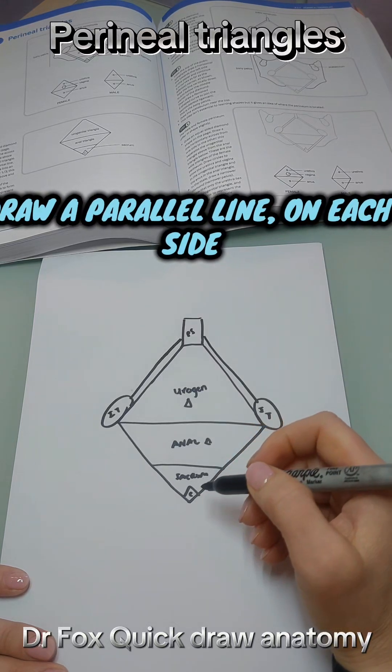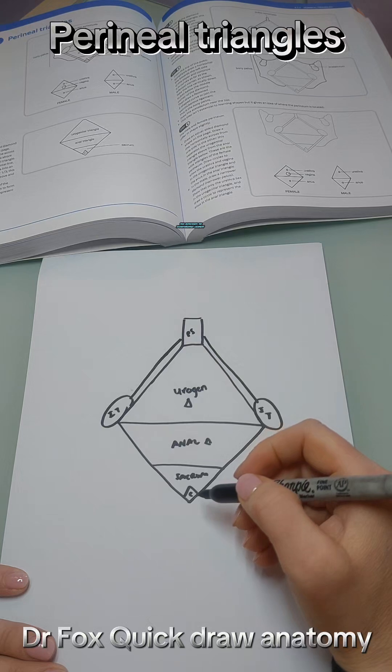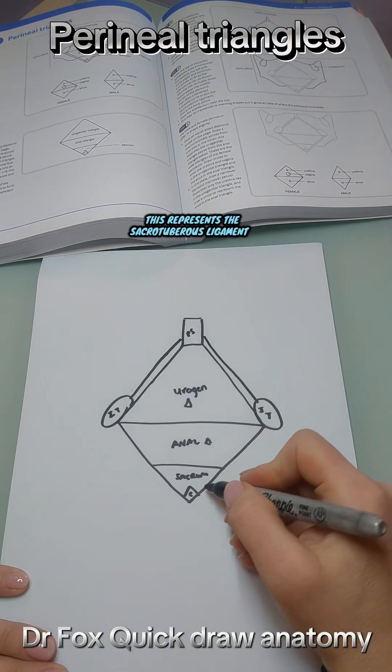In the lower half of the large diamond, draw a parallel line on each side and this shows the sacrotuberous ligaments.